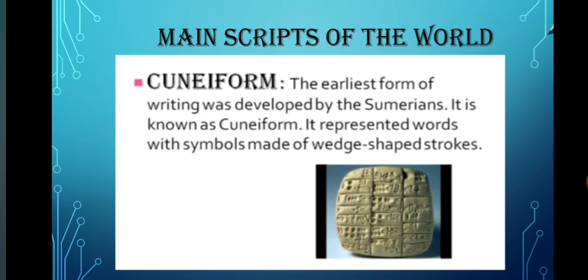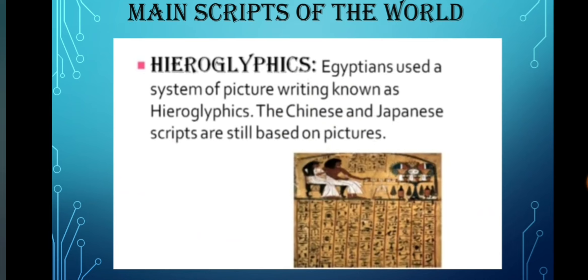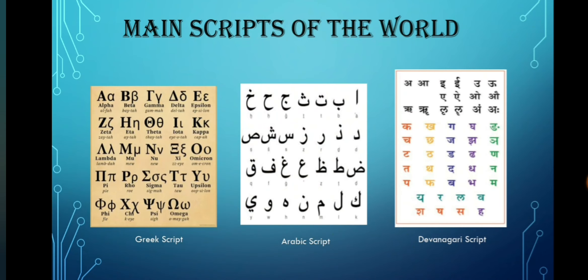Let's discuss about the main scripts of the world. The earliest form of writing was developed by the Sumerians, known as cuneiform. It represented words with symbols made of wedge-shaped strokes. Egyptians used a system of picture writings known as hieroglyphics. The Chinese and Japanese scripts are still based on pictures. A few more scripts of the world are Greek script, Arabic script, and Devanagari script. The Hindi script is based on Devanagari script, which is based on sounds and not on pictures.